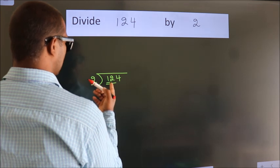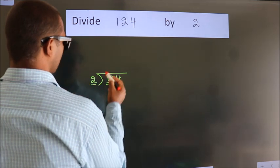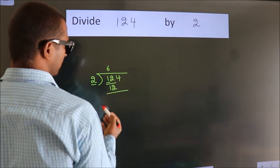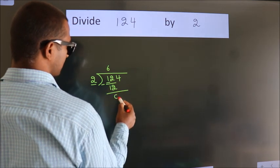When do we get 12? In 2 table, 2 times 6 is 12. Now we should subtract. We get 0.